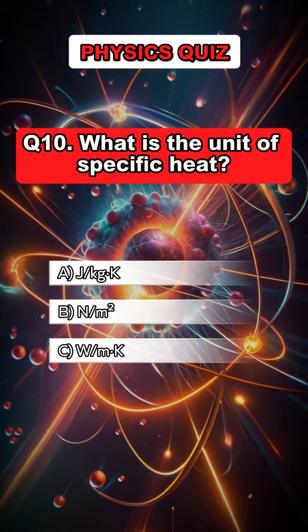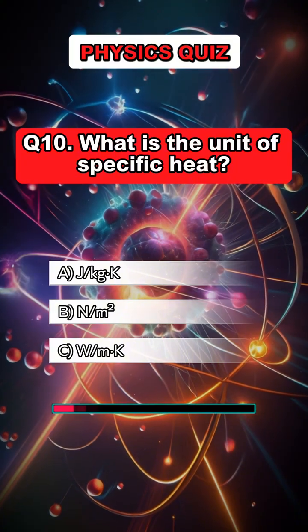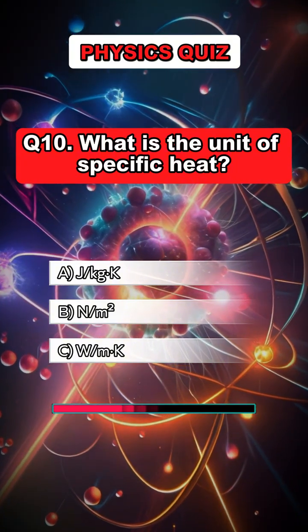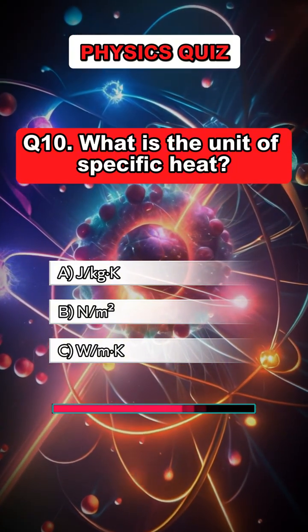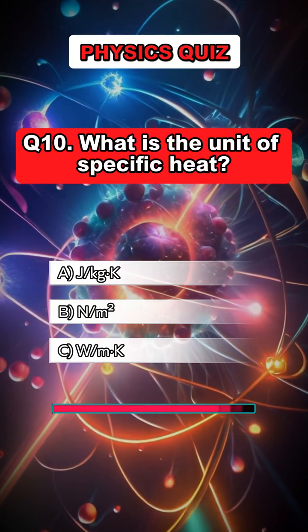Question 10. What is the unit of specific heat? Answer A. J per kilogram times Kelvin.